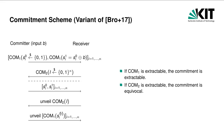It is easy to see that this commitment scheme is extractable. It suffices to extract the share commitments sent in the first round. As the commitment to the index vector i is hiding, a corrupted committer will not be able to send shares of a different message in the first message of the unveil phase, except with negligible probability. Conversely, if the receiver is corrupted, we can create an equivocal commitment.